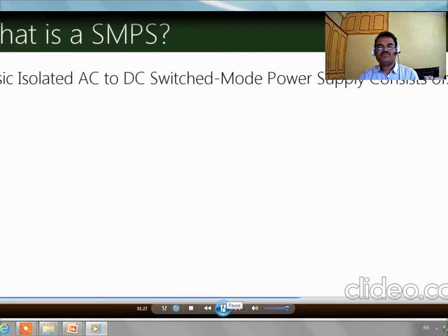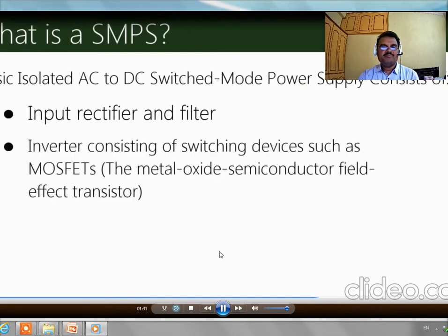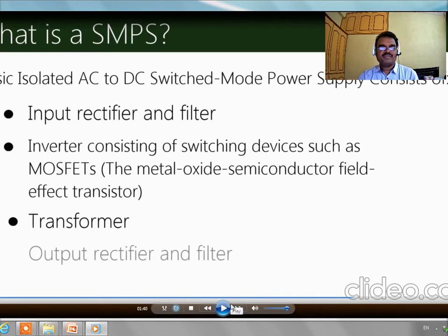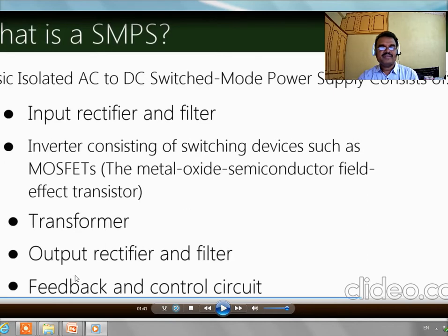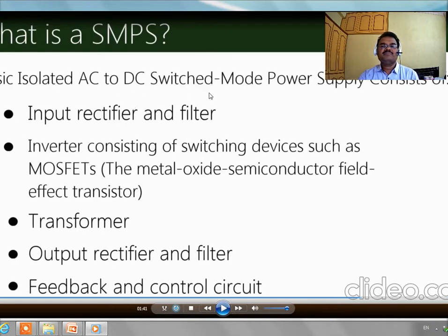A basic isolated AC to DC switched mode supply consists of an input rectifier and filter, an inverter consisting of switching devices such as MOSFETs (metal oxide semiconductor field effect transistors) and transformer, an output rectifier and filter, and a feedback and control circuit. In computers we generally use AC to DC switch mode power supply.